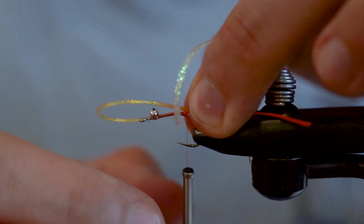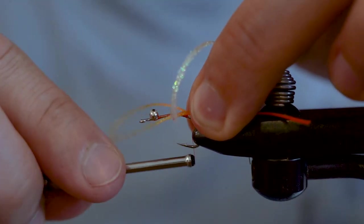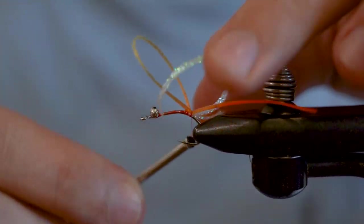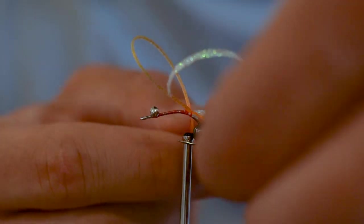For this variant I'm going to add in some rubber legs at this stage. I've got one doubled over rubber leg here which I'm going to trap down with a couple wraps and then make sure it fits evenly on either side of the body. Just be careful not to pull too hard on your rubber legs as you can snap them off.